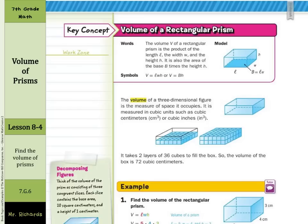And now a little bit of background on volume. The volume of a three-dimensional figure is the measure of space it occupies. It is measured in cubic units, such as cubic centimeters or cubic inches. It takes two layers here of 36 cubes to fill this box, so the volume would be 72.